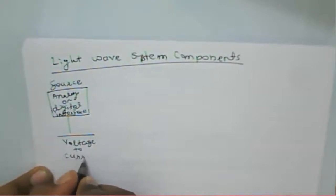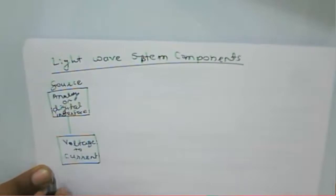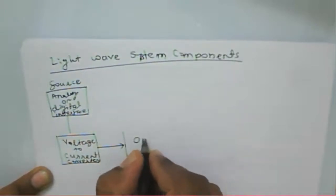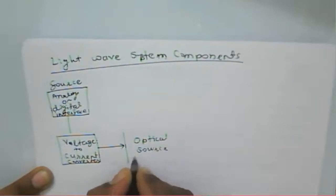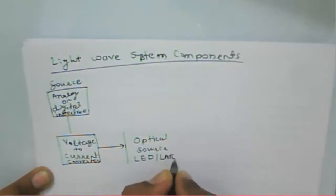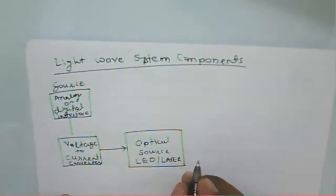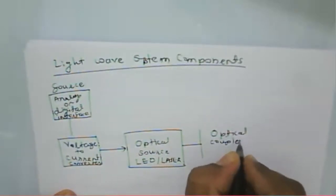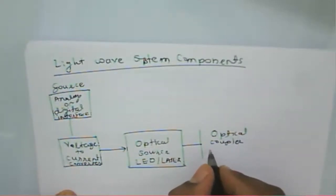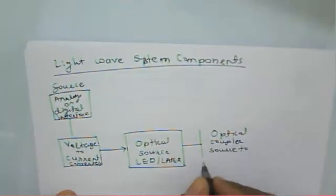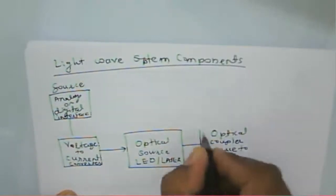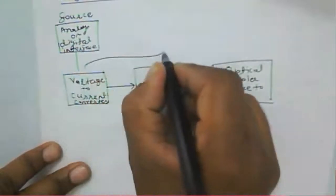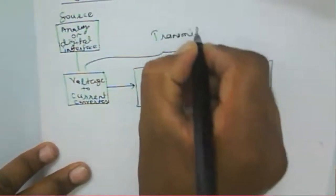After the voltage-to-current converter, we have an optical source, which can be an LED or a laser. Then we have an optical coupler, whose purpose is to take power from the source and couple it to the fiber. This entire portion — interface, converter, optical source, and coupler — belongs to the transmitter.